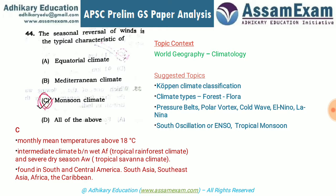In monsoon climate, temperatures are around 18°C and it is found in South and Central America, Southeast Asia, South Asia, parts of Africa, and the Caribbean. Related suggested topics include climate classification systems like Köppen's climate classification, types of forests with their typical flora and fauna, and important phenomena like El Niño, La Niña, and the Southern Oscillation.